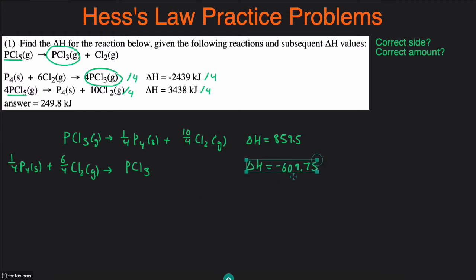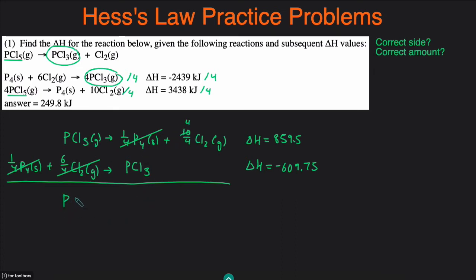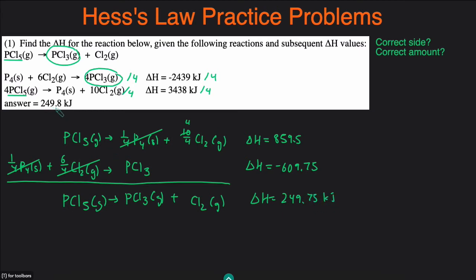Next, we cancel out the species that appear on the opposite side. There's one-fourth P4 on the left and one-fourth P4 on the right, so we can cancel that out. We can also cancel out some of the Cl2. We have 6 over 4 and 10 over 4, so we subtract 6 over 4 from both sides, leaving us with 4 over 4. Bringing what's left over down gives us PCl5 gas becoming PCl3 gas plus Cl2 gas. That matches the target reaction. Adding the delta H's: 859.5 plus negative 609.75 gives 249.75, which rounds to 249.8. It matches.